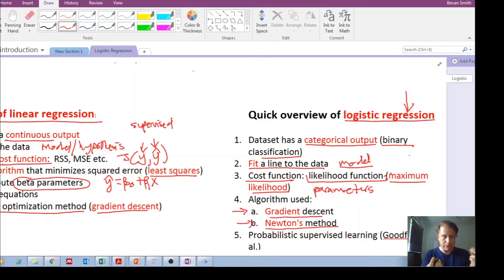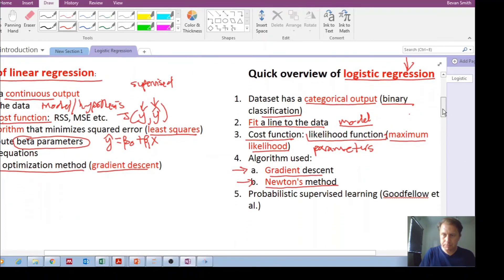And for linear regression we are trying to minimize these cost functions, the squared error, and we've got a couple of methods for linear regression to determine the parameters. For logistic regression, we use maximum likelihood—we want to maximize the likelihood—and we can use gradient descent, Newton's method.